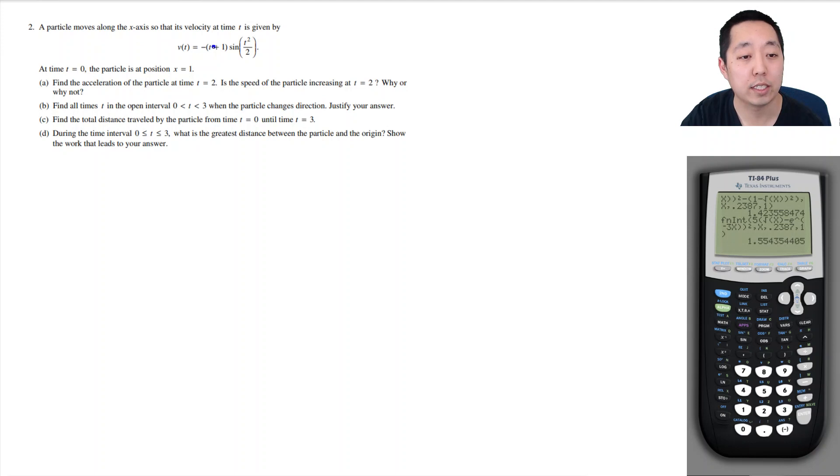We have a particle moving along the x-axis so its velocity at time t is given by this function. At time t equals 0, the particle is at position x equals 1. Part A asks: Find the acceleration of the particle at time t equals 2. Is the speed of the particle increasing at t equals 2, why or why not?